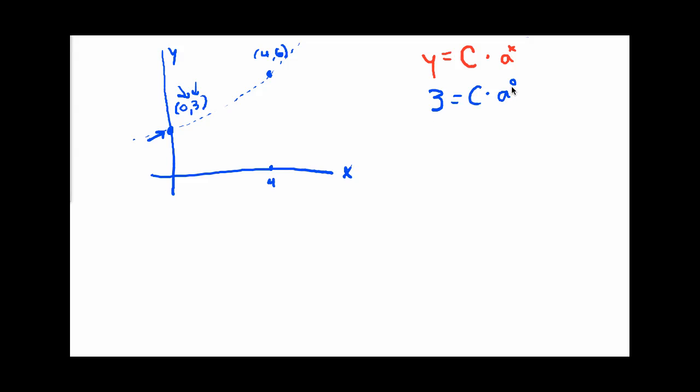Now from this point, some nice things happen. a to the 0 is 1. And in any exponential function, the a is assumed to be a positive number. And so that positive number to the 0 power is always 1. So this flat out tells me that C equals 3, and that's a very important piece of information because now I can go back and upgrade my formula here.